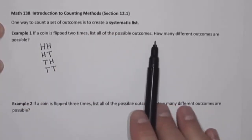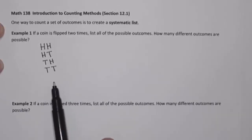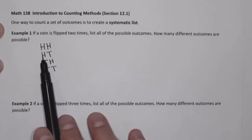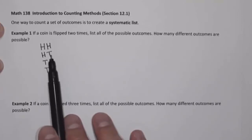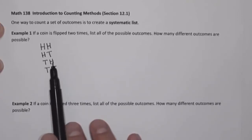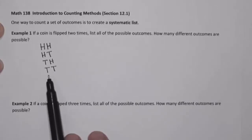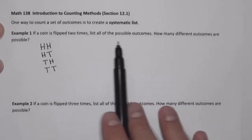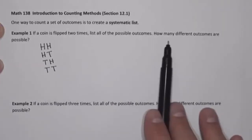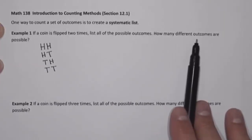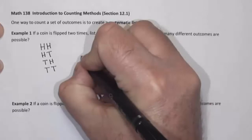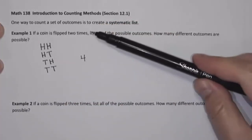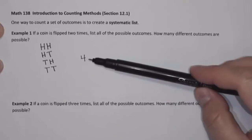So if I flip a coin two times, the possibilities are: heads-heads, heads-tails, tails-heads, tails-tails. We've listed all of the possible outcomes, and the answer to how many different outcomes are possible is four. If I flip a coin two times, there are four possible outcomes.